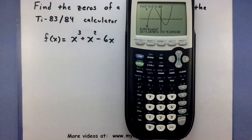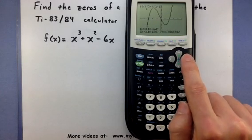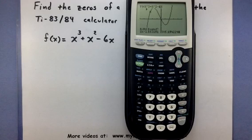And now it wants to know the right bound. So now we're going to move that cursor to some place on the right side of that zero. As soon as you get it there, press enter one more time.